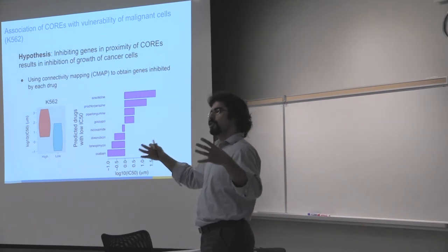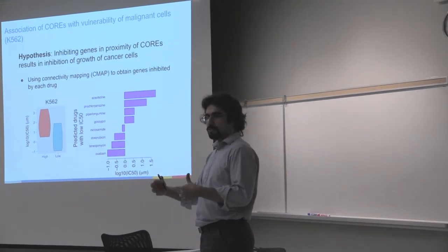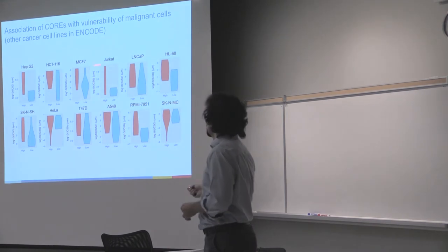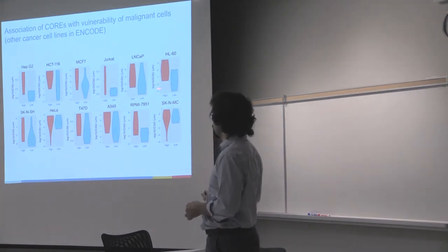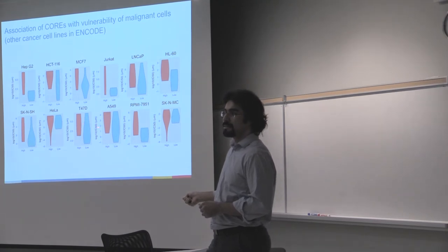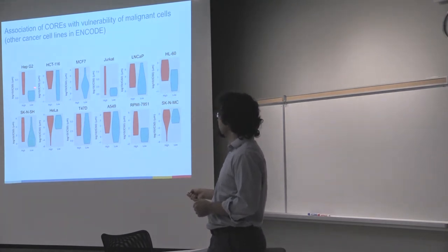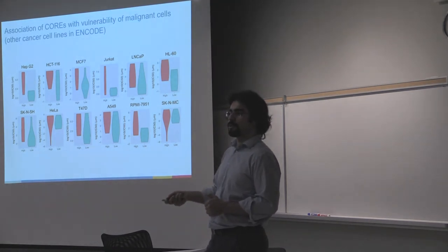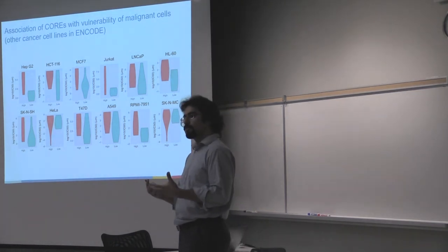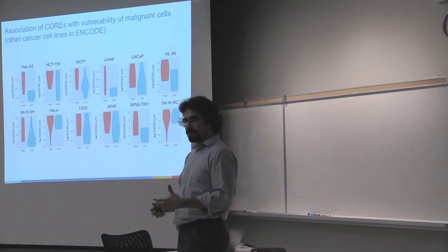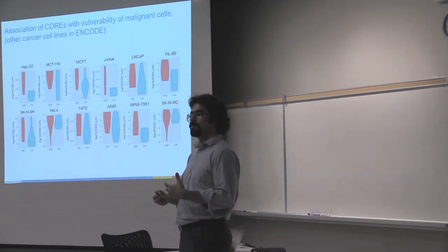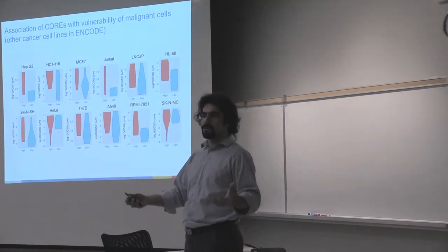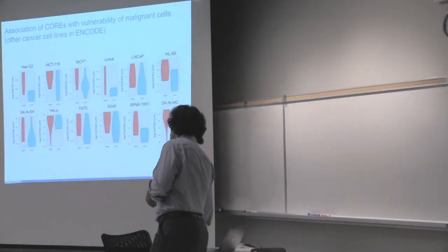We used other cancer cell lines in the ENCODE project and showcased that in all of those cancer cell lines, we see the same kind of behavior. That CREAM, if you have drugs inhibiting genes in proximity of CREAM-identified cores, those drugs are more effective. This provides us an opportunity for new epigenomic features that we can use for predicting drug response or even for identifying drugs effective on a new tumor type, cancer cell lines, or other applications in the field of pharmacogenomics in general.